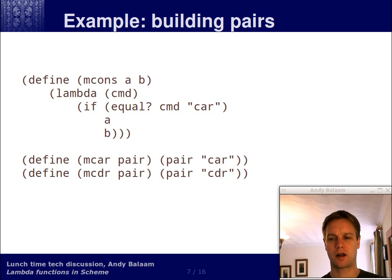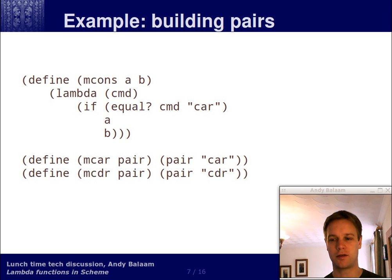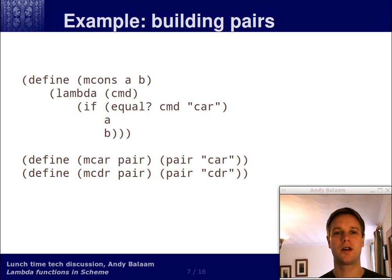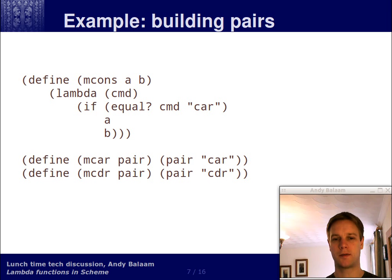So let's jump into an example of how we might use this. Beware — this gets meta, it gets tricky, but it's seriously cool. Introducing you to lambda is my excuse for taking you through two really cool examples. So let's look at the first one. Let's define a procedure called mcons, which takes in two arguments A and B. And the body of that procedure is a lambda, which means this procedure returns a procedure. The procedure that it returns takes one argument.